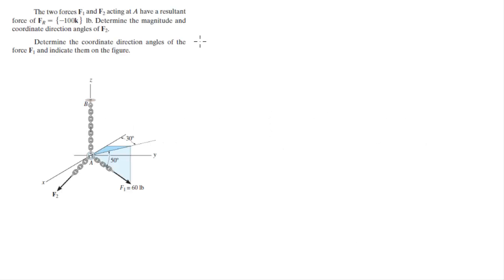Alright guys, now we're going to do these two problems that say the two forces F1 and F2 acting on a resultant force of FR on the negative C of negative 100. Determine the magnitude and coordinate direction angles of F2, and then determine the coordinate direction angles of F1 and show them in the figure. Alright, let's start. We got FR which is 0i plus 0j minus 100k.